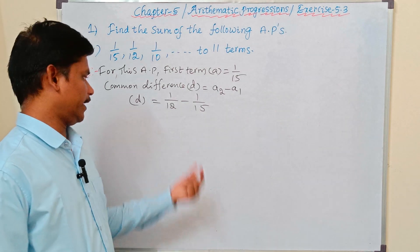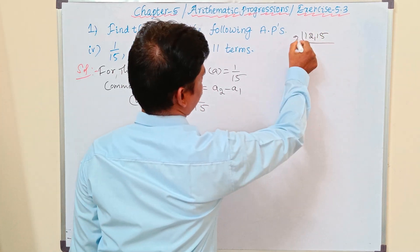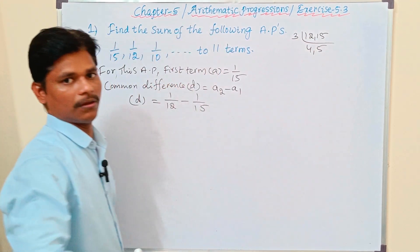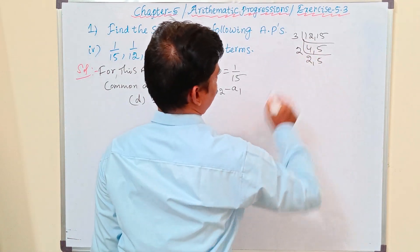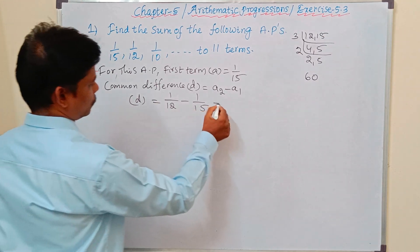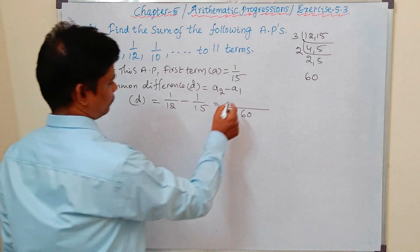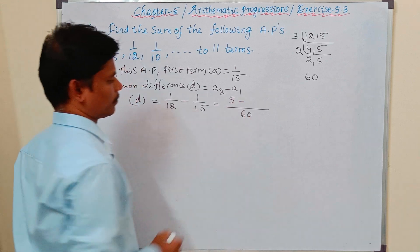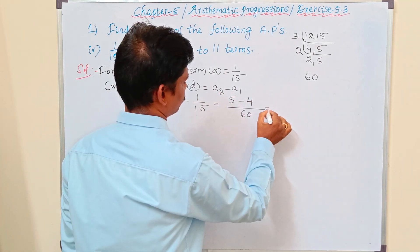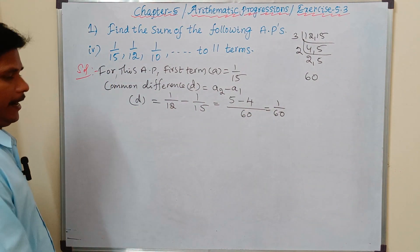To subtract 1/12 − 1/15, take the LCM of 12 and 15. LCM = 60. So 1/12 = 5/60 and 1/15 = 4/60. Therefore d = 5/60 − 4/60 = 1/60. Common difference d = 1/60, and n = 11.